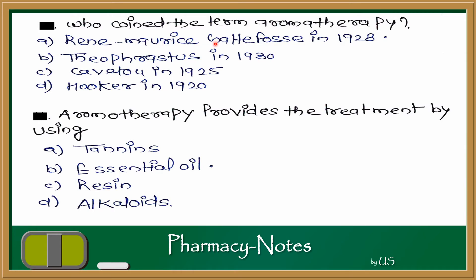Next question: Aromatherapy provides treatment by using which substance? The options are Tannins, Essential Oil, Resins, and Alkaloids. The perfuming oils, which are of volatile nature — essential oils like clove oil, lavender oil, and rose oil — are used in Aromatherapy treatment. The answer is Essential Oil.